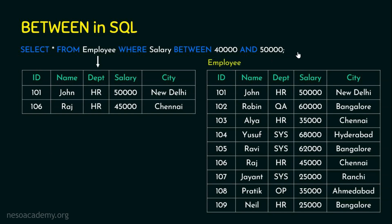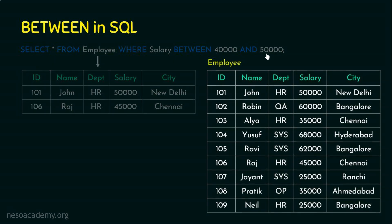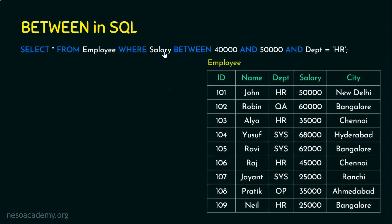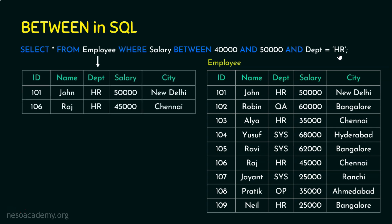If you want to sort the result you can use ORDER BY. Now let's bring in another situation with the same employee table, this time with two conditions: the salary should be BETWEEN 40000 AND 50000 AND the department is HR. Note there are two ANDs here — one is associated with BETWEEN, and the other is a logical AND for multiple conditions. So salary BETWEEN 40000 AND 50000 is one condition, and department = 'HR' is another.